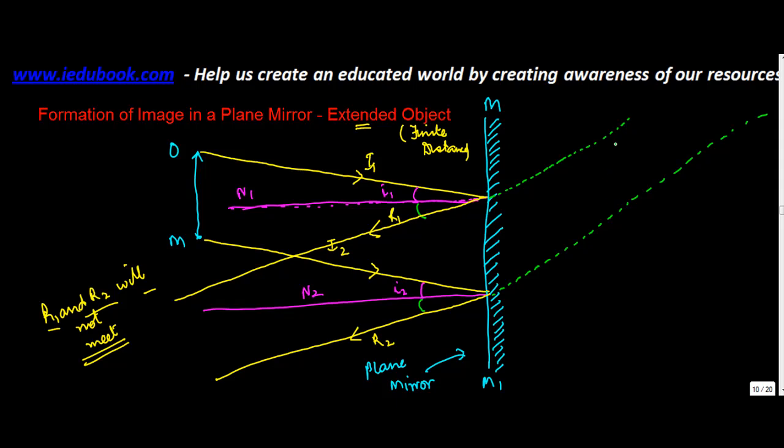So how do we find out the image in this case? So what happens is in order to find the image we draw another ray from point O which goes straight to the mirror. Let's say we call this as OA. Now when this goes and hits the mirror because it is a normal in itself or it is at right angle to this, this is going to be reflected back.